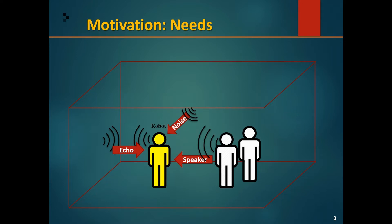In this situation, the social robot would be hearing the echo of its own voice bouncing off the walls, and it would also be hearing the speakers' voices, and also noise from the background. Echo cancellation, speaker diarization, and sound source localization are all for helping out the social robot in such a situation.